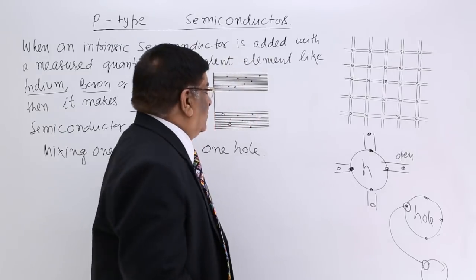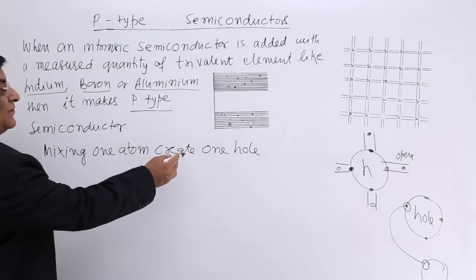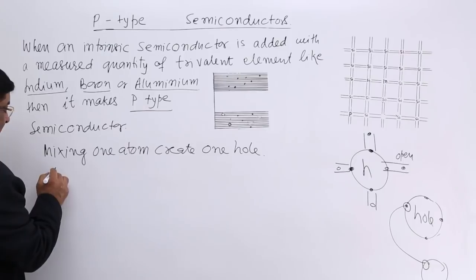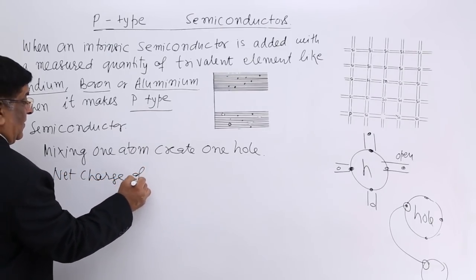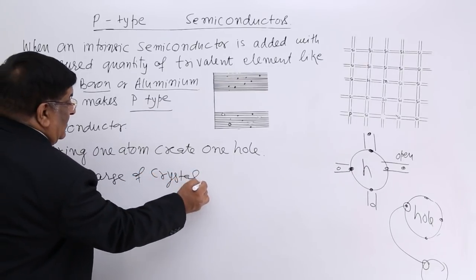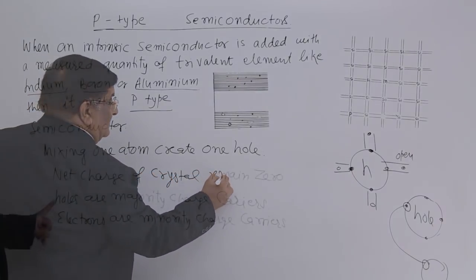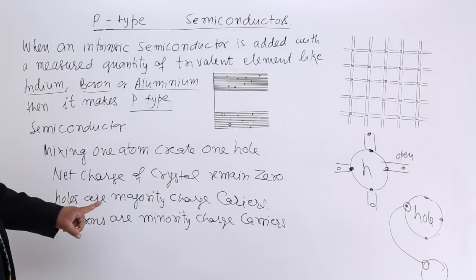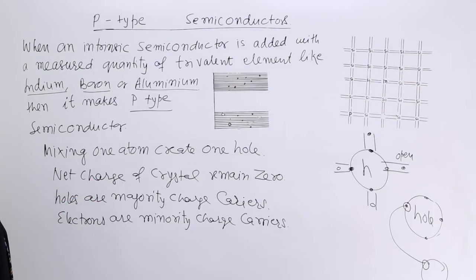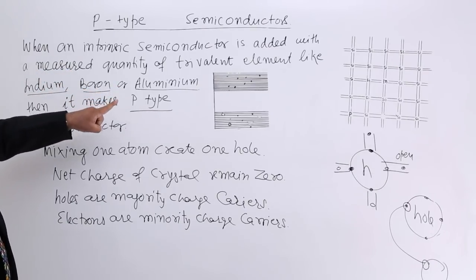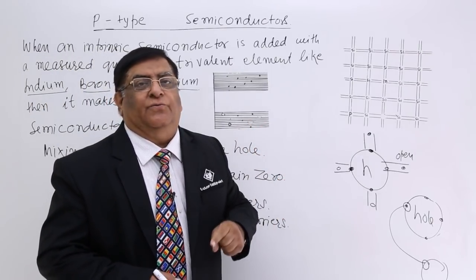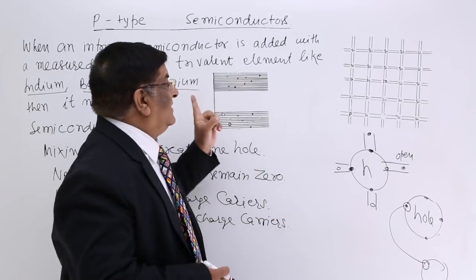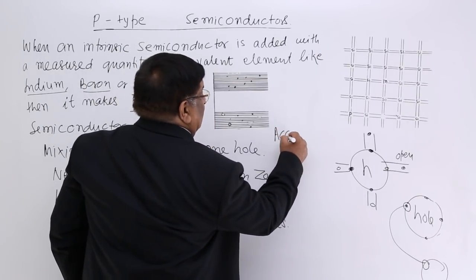If we mix one million aluminium atoms, one million holes are created — one million charge carriers — but the net charge of the total lattice is still zero. So remember: creating holes does not change the net charge of the crystal. In P-type, holes are the majority charge carriers and electrons are the minority charge carriers. This type of trivalent dopant is ready to accept one electron, so they are known as acceptors.